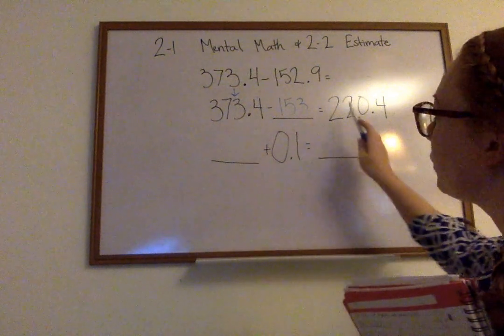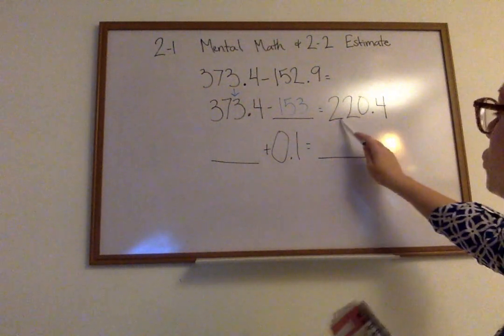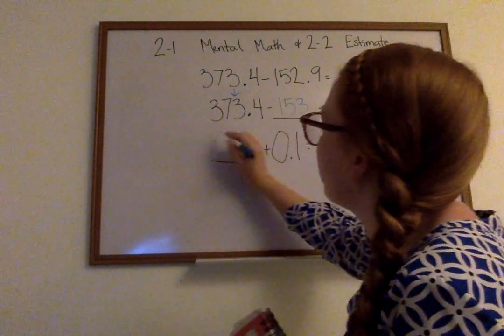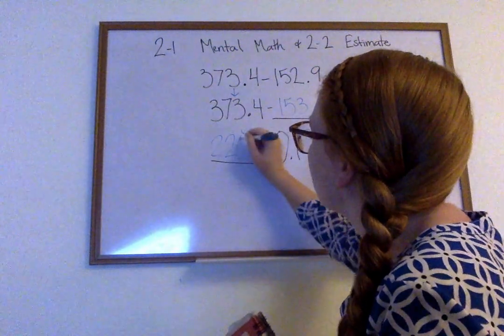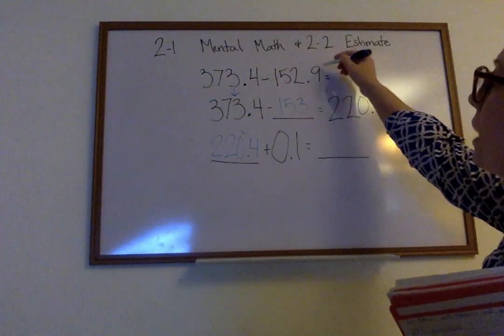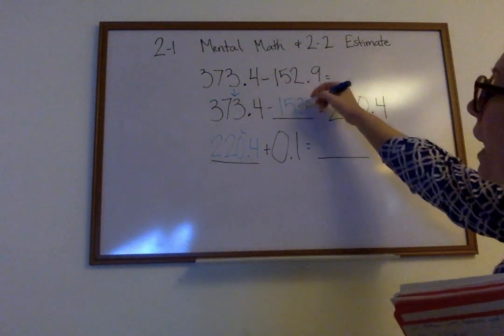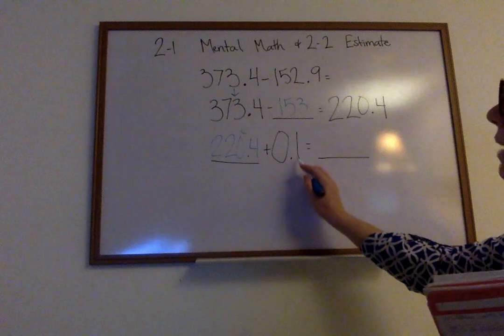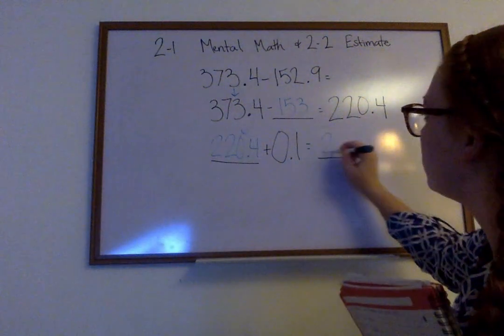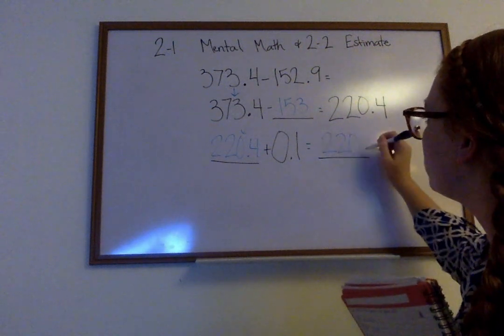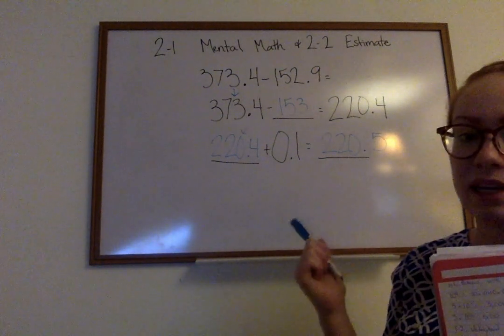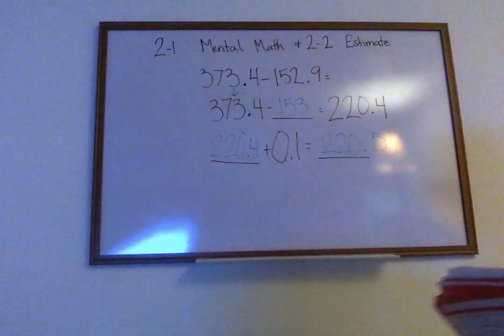Now when you come on down here, you see this 220.4, you're going to bring that one down here and plug it in. Then this is that 0.1 that we lost up here when we added up to 153. They're adding it back in now, down here at the end, and now it's going to be 220.5. So these ones are kind of like a puzzle, you have to think about them. Look at our next one.